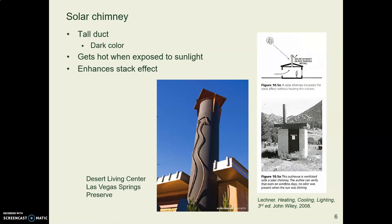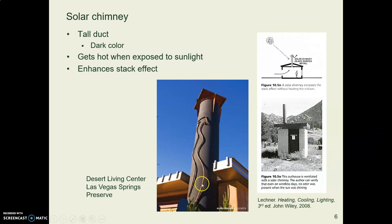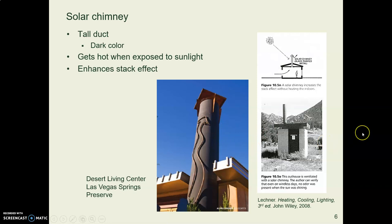Surprisingly, if you paint a stack or tube a dark color like black, you actually get more cooling — which you might think is the opposite. But here's how it works: black, having low albedo, absorbs a lot of solar radiation. As the stack heats up, the air inside is warmer, it rises through the stack, and that creates more suction below, actually pulling more air through.